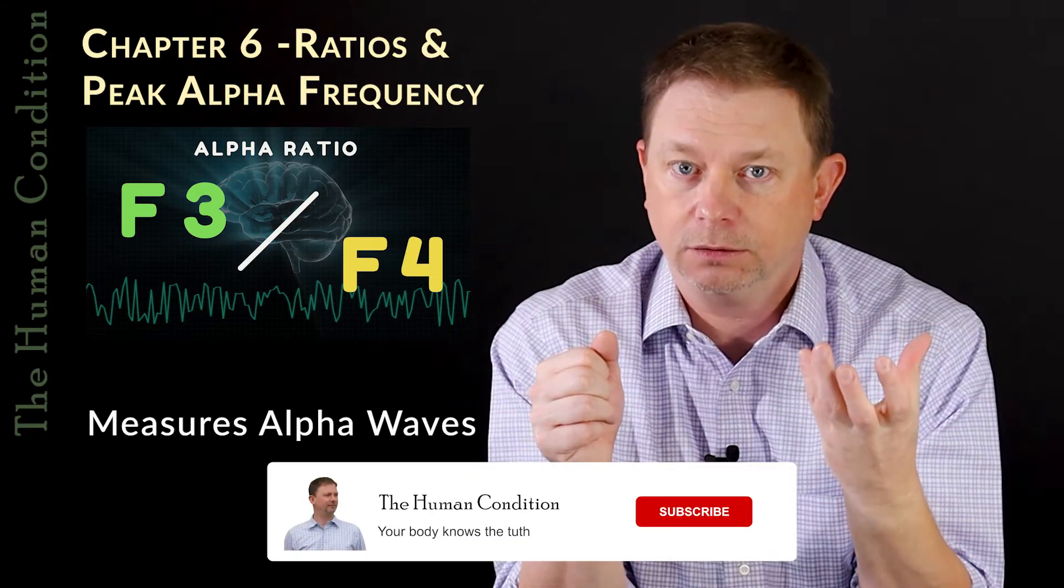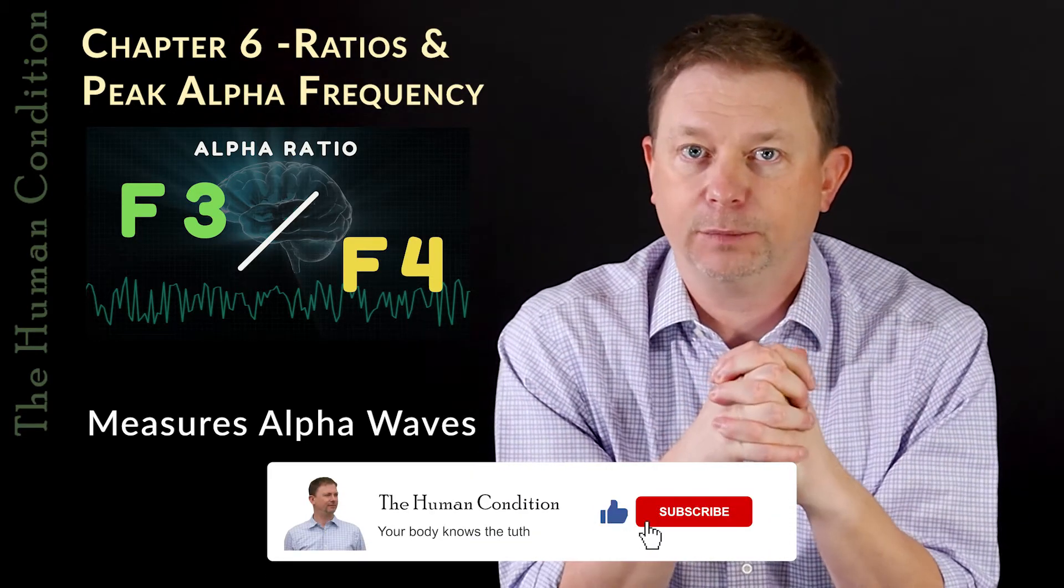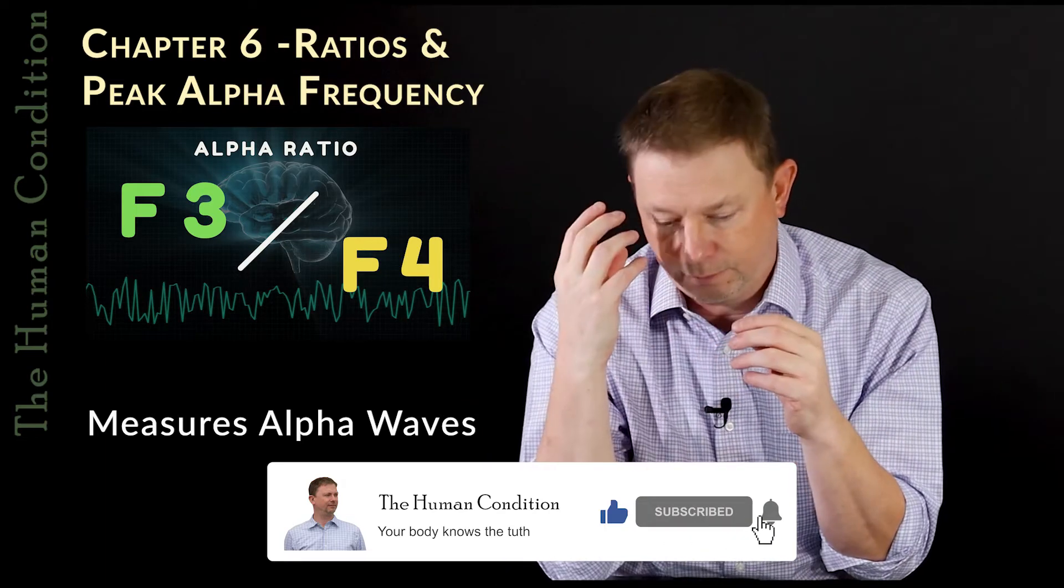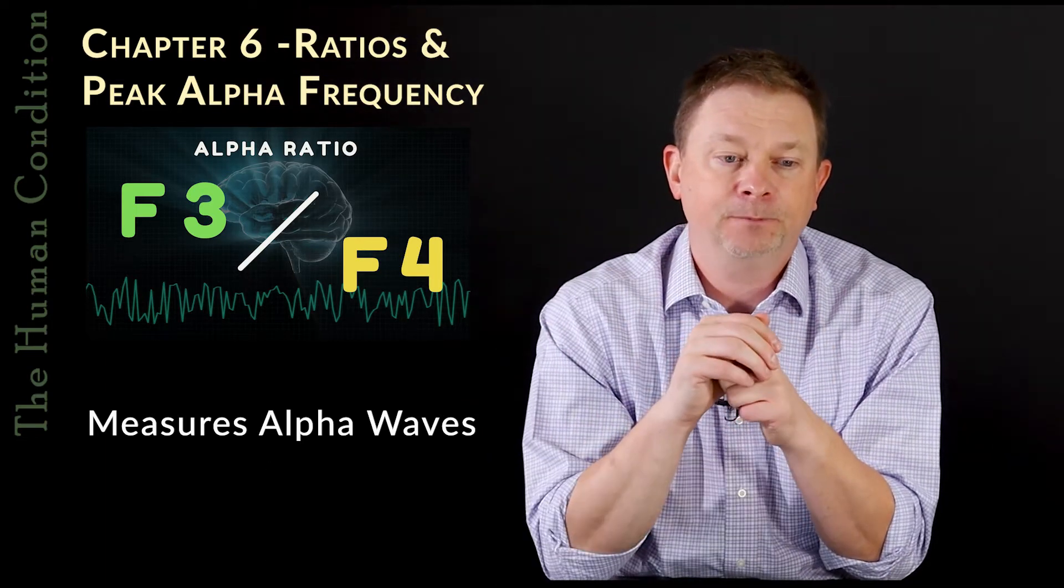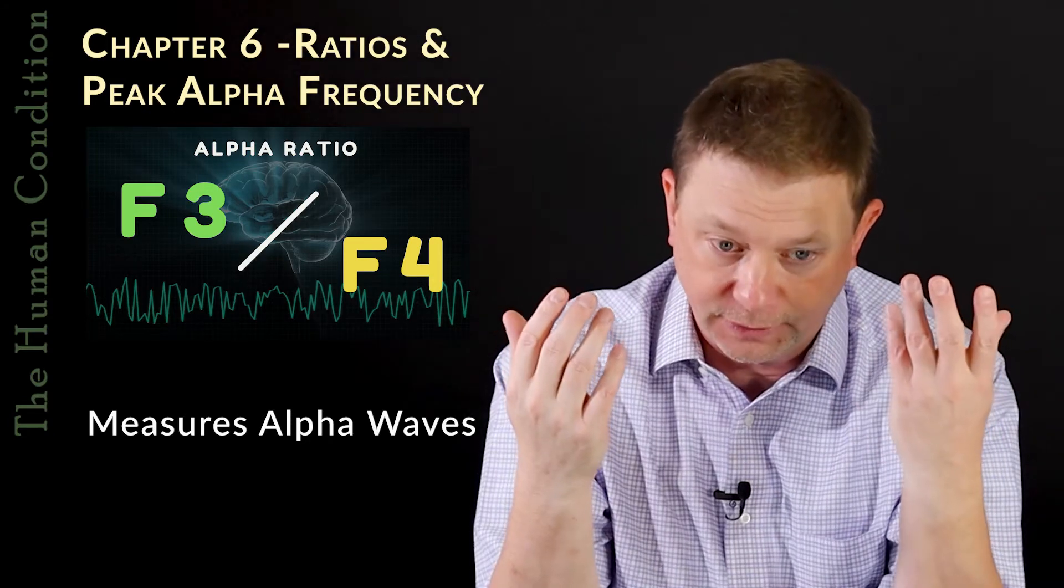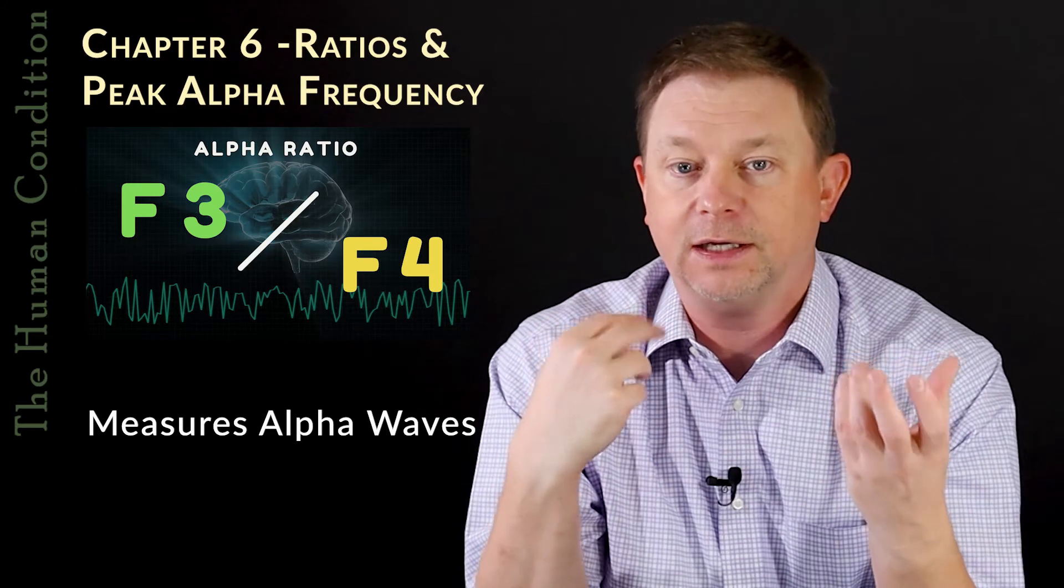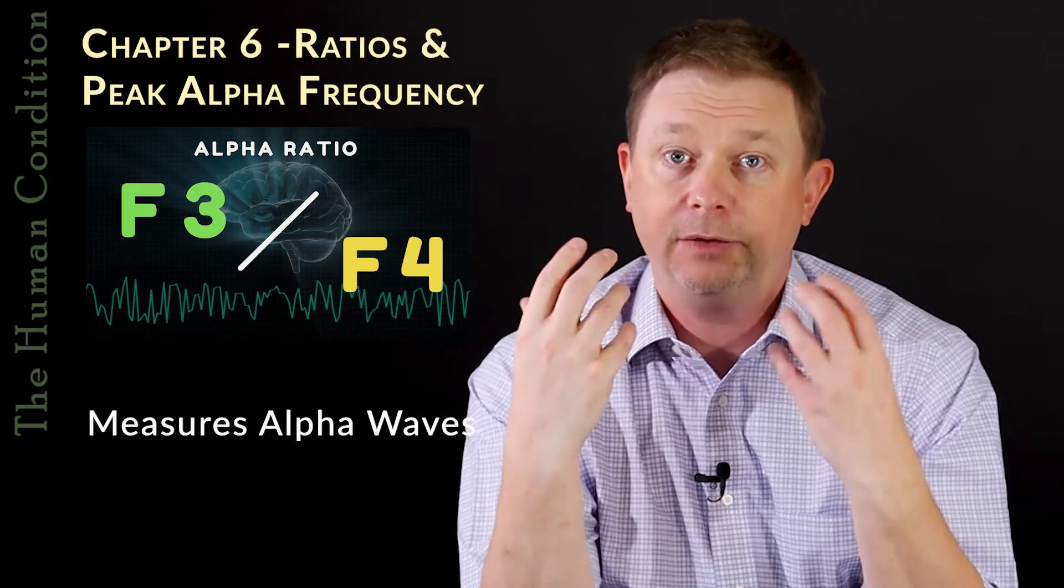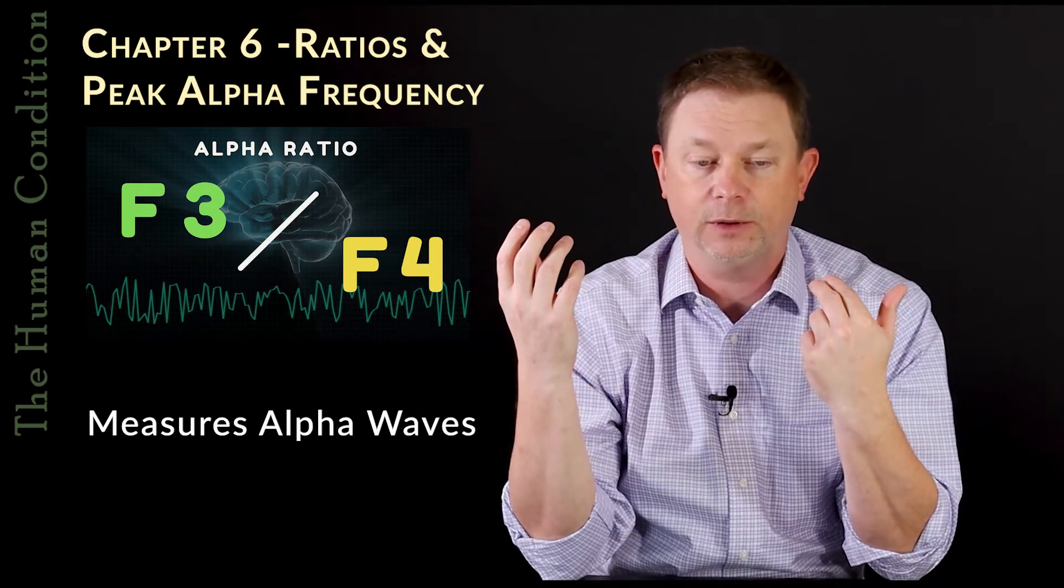And if your right frontal lobe was firing very well, you wouldn't have much anxiety. But if you have a strong left frontal lobe with all of its output, you can get a state of anxiety without depression. On the other hand, your left frontal lobe is not firing very well.